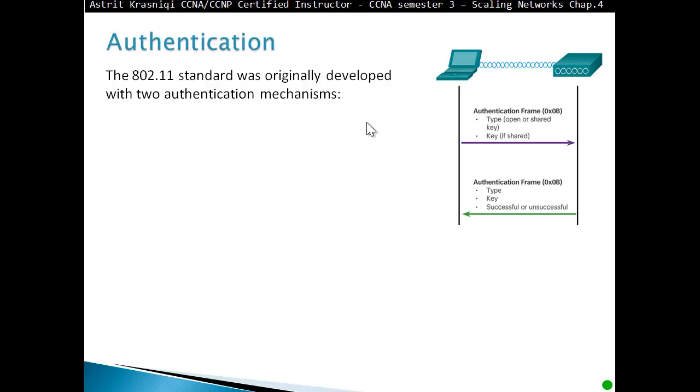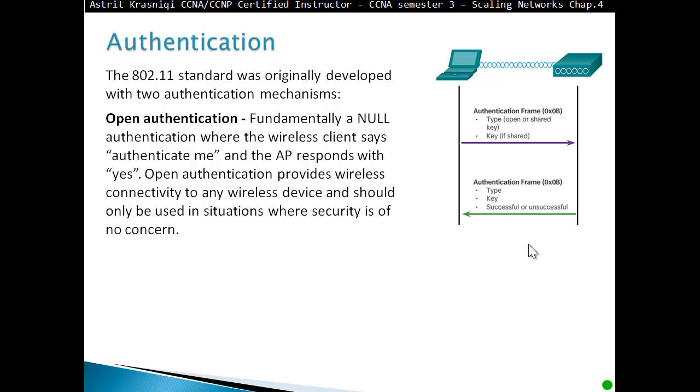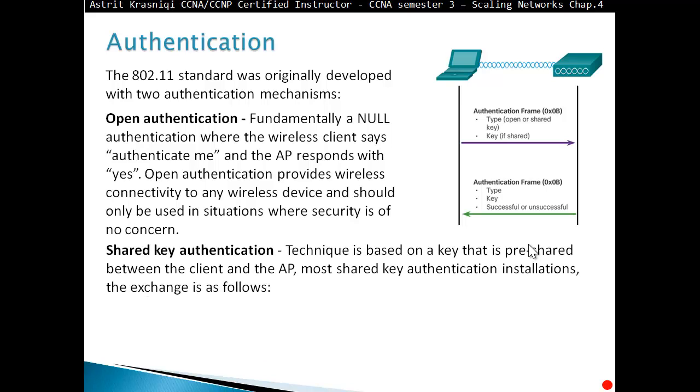Authentication: 802.11 standard was originally developed with two authentication mechanisms. Open authentication is fundamentally a null authentication where the wireless client says authenticate me and the access point says OK. Open authentication provides wireless connectivity to any wireless device and should only be used in situations where security is not a concern. You'd never want to use open authentication because anybody within the vicinity with a wireless network card will be able to authenticate and come in your network. It's good if you're troubleshooting or if you install a new wireless network. Once you are sure everything is working correctly, you move on to shared key authentication. This technique is based on a key that is pre-shared between the client and access point.